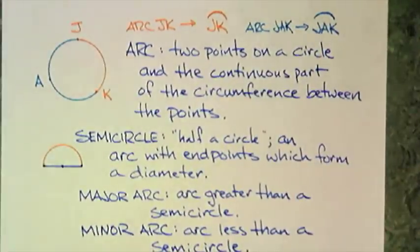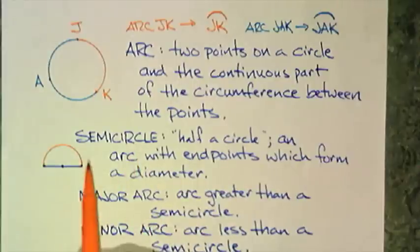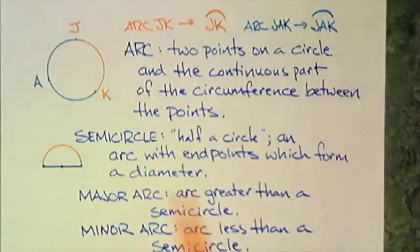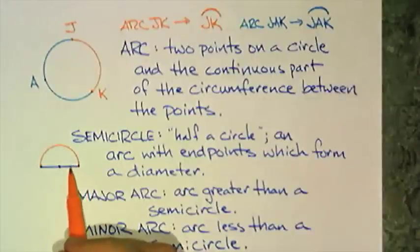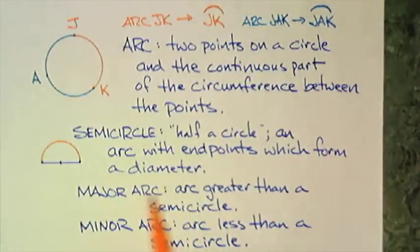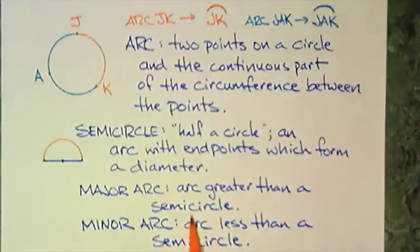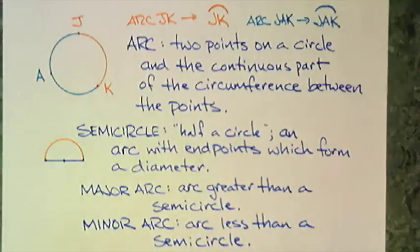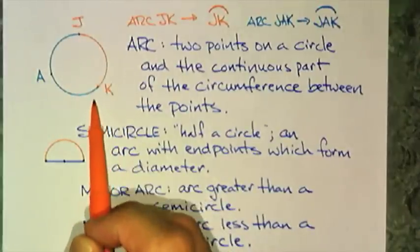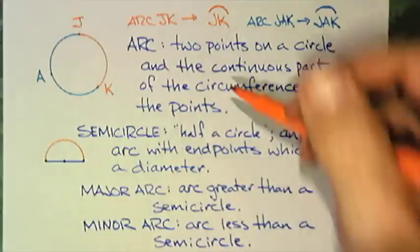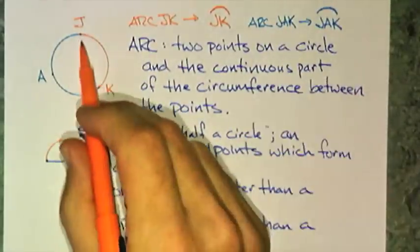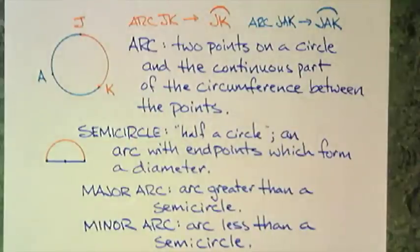So then we have some specific arcs. We have a semicircle, which is half a circle. And that's an arc with end points which form a diameter, such as this picture here. We have major arc, which is an arc greater than a semicircle and a minor arc, which is less than a semicircle. And so arc JK appears to be less than a semicircle. So that would be a minor arc. And JAK appears to be a major arc.